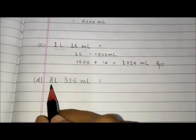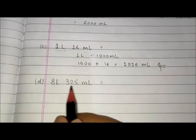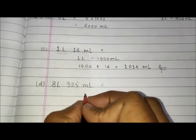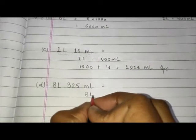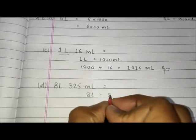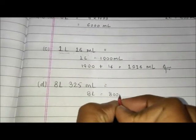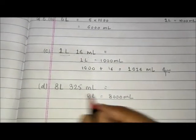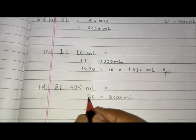Next is 8 liters 325 milliliters. This 8 liters will be 8000 milliliters when we multiply by 1000, and then we add 325 milliliters to get 8325 milliliters.